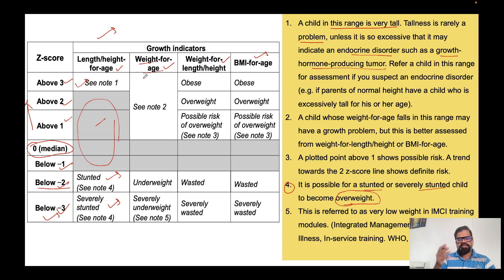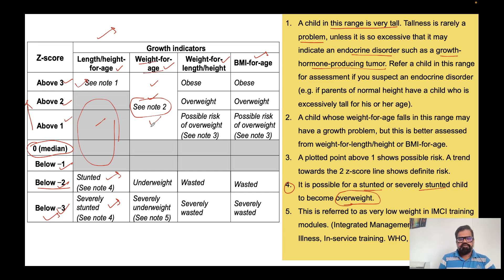For the second indicator, weight-for-age, we check whether weight is increasing appropriately with age. If the plotting falls above one, above two, or above three z-score lines, there can be a growth problem, but this is best assessed by weight-for-height or BMI-for-age, which I will discuss subsequently. If weight-for-age is at average or below minus one, it is not a problem.